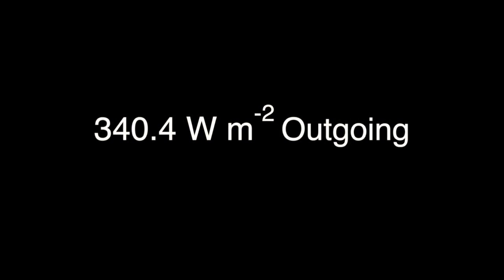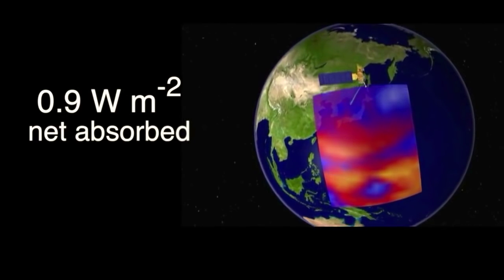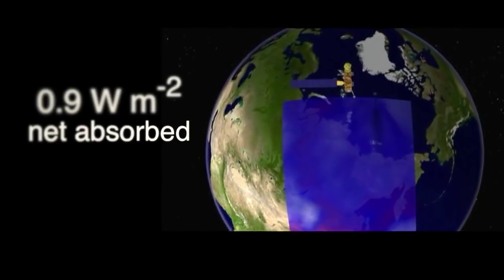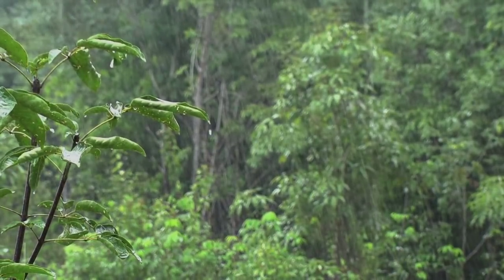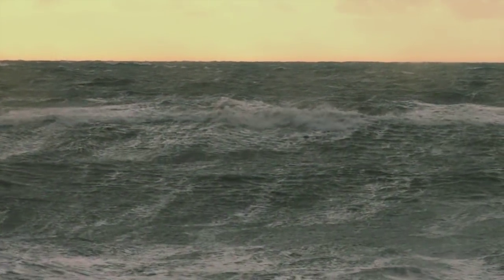You need only look to what's happening to greenhouse gases to see the causes of current imbalances. When Earth's energy absorbs more than it emits, what are the impacts? And where in the Earth's system does the extra energy go? How certain are scientists?